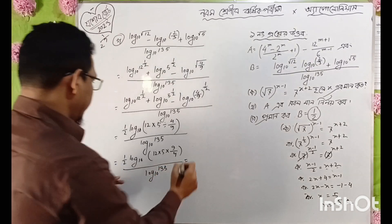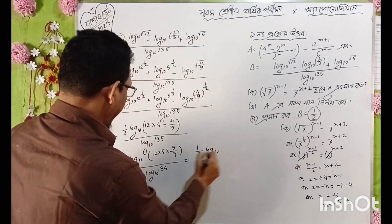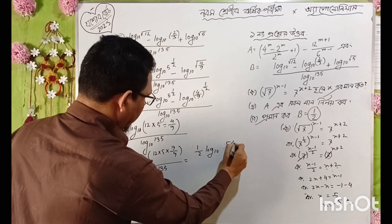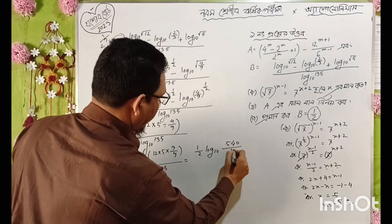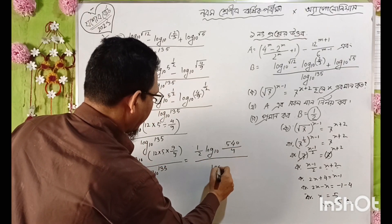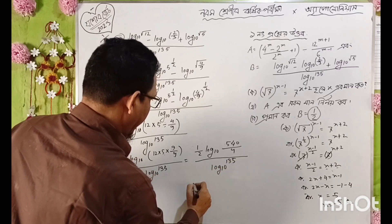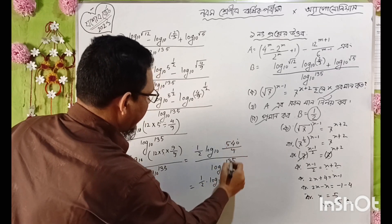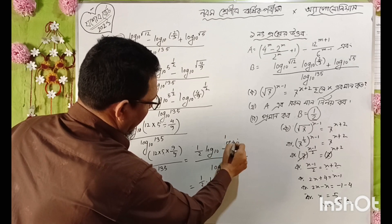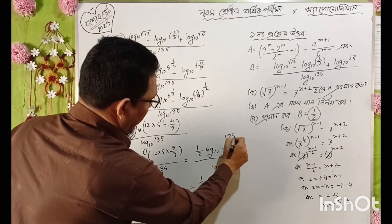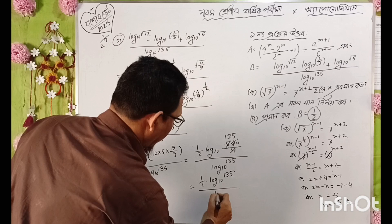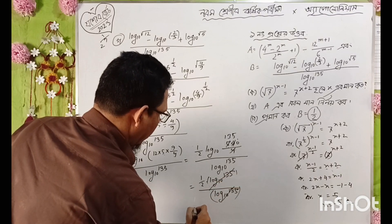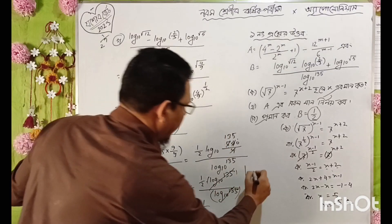So what do we do? 1 by 2 log 10. 5, 6, 9, 9, 5, 4, 5, 4, 5, 4. How do we do this? 1 by 2 log 10, and it is only 2, and 1 by 1345, and log 10 x 35. So we will easily calculate this. What is the proof? Yes. What is the proof? Proved.